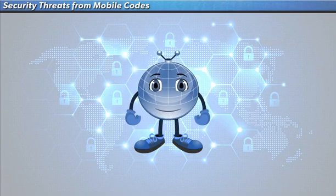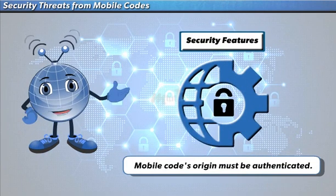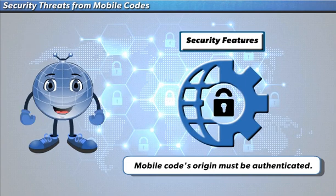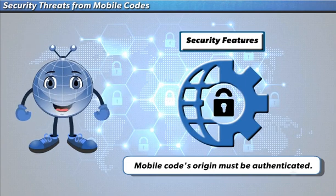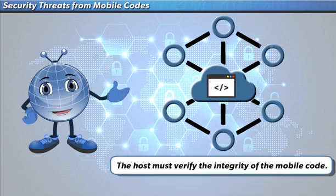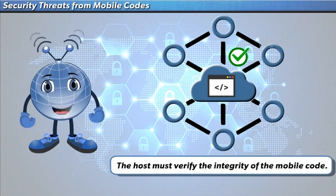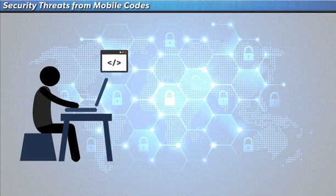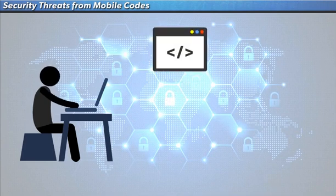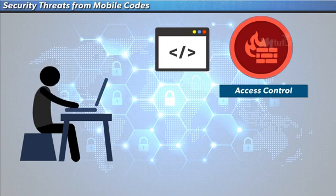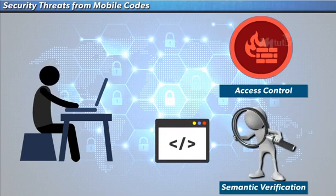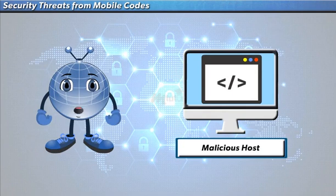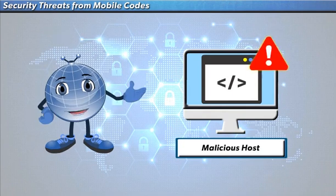Code mobility imposes a few security features when protecting a host from malicious code. The mobile code's origin must be authenticated, because the host and mobile code are separate identities. The host must verify the integrity of the mobile code it received, as the code is exposed throughout the network. Since mobile codes are generated by another party, their actions must be limited through access control and checked through semantic verification.